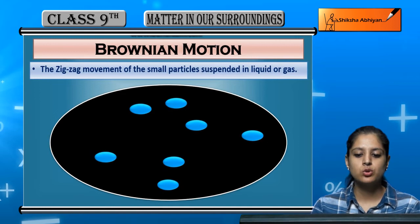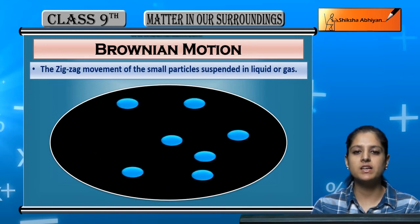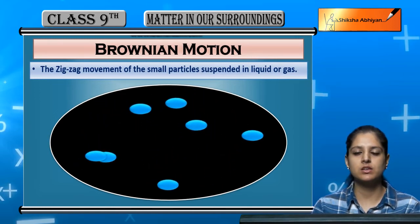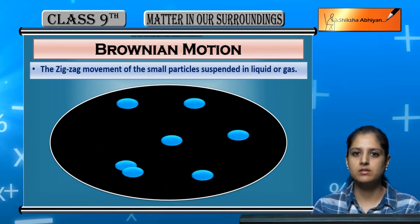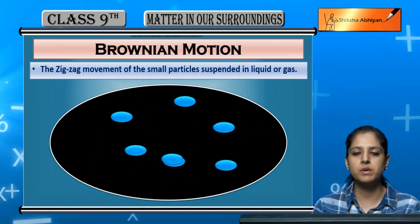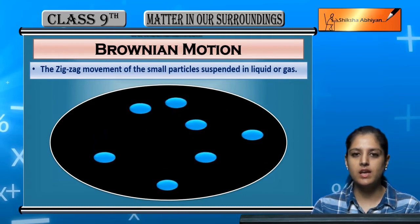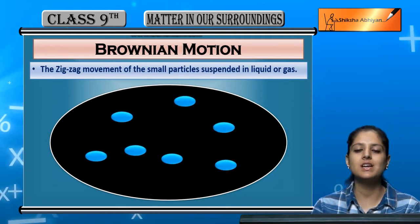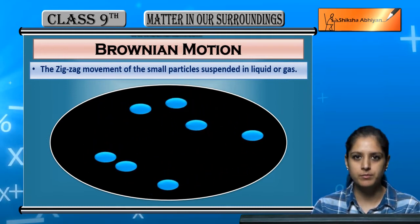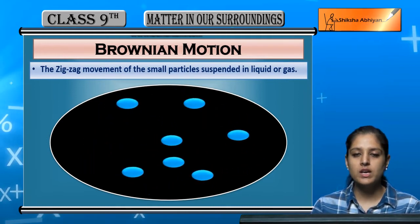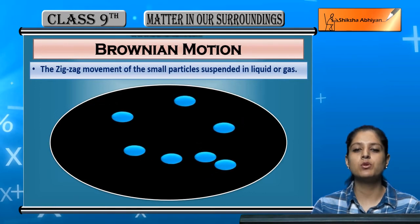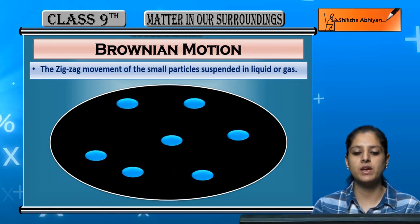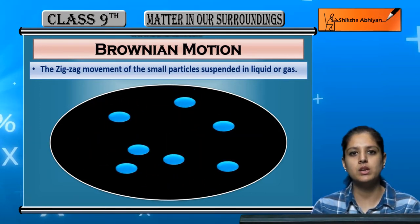In a liquid or gas container, inside there are lots of spaces, and the particles are constantly moving. This constant zigzag motion we call Brownian motion.